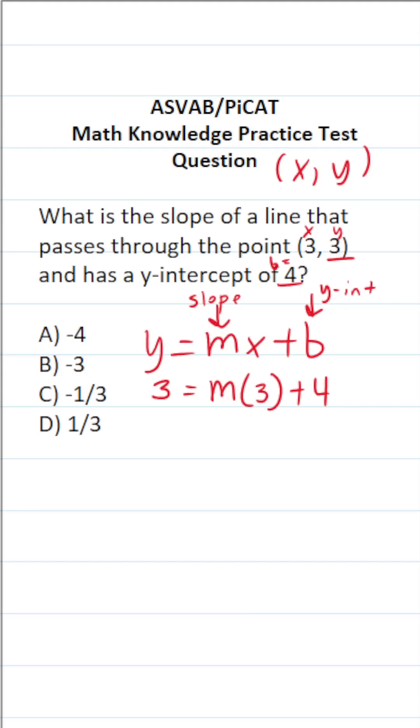All right, so let's solve this one. This becomes 3 equals m times 3, which is the same thing as 3m plus 4. Let's subtract 4 from both sides of this equation. This crosses out, leaving us with 3m over here. 3 minus 4 is negative 1. And finally, let's get m by itself by dividing both sides of this equation by 3.